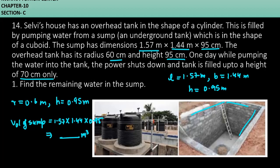Now multiply these three and whatever your answer is, it will be in meter cube. So 1.57 into 1.44 into 0.95, this is coming out to be 2.14 meter cube.